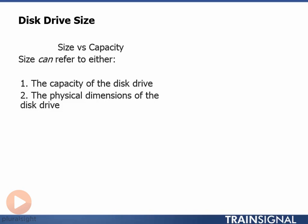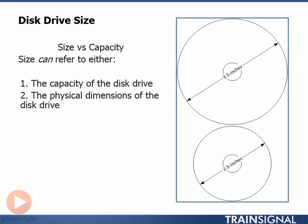In the enterprise tech world there are two common drive sizes, which we usually refer to as form factors. These are 2.5 inch and 3.5 inches. When we say 2.5 inch or 3.5 inch, we're talking about the diameter of the platter. Both drive sizes can be SAS, SATA, or Fibre Channel and can usually support most of the different RPMs available: 7.2K, 10K, and 15K.